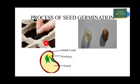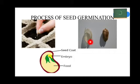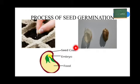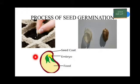Germination of Seed. The growth of a plant begins from a small seed. The seed is covered with an outer cover called the seed coat. For example, if you soak a seed for a day, the next day you can see that the seed has been separated from its cover. The seed has three different parts: the seed coat, embryo, and the food for the seed.